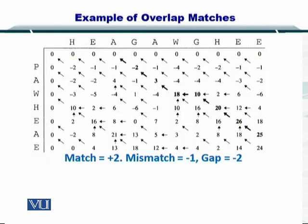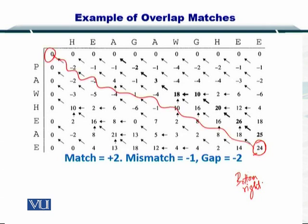Here, the matrix has been completed for you, and I'm going to talk about how the traceback strategy can be modified. So for the global alignment, we started from the corner element or the bottom right element, and we made our way to the top left element.